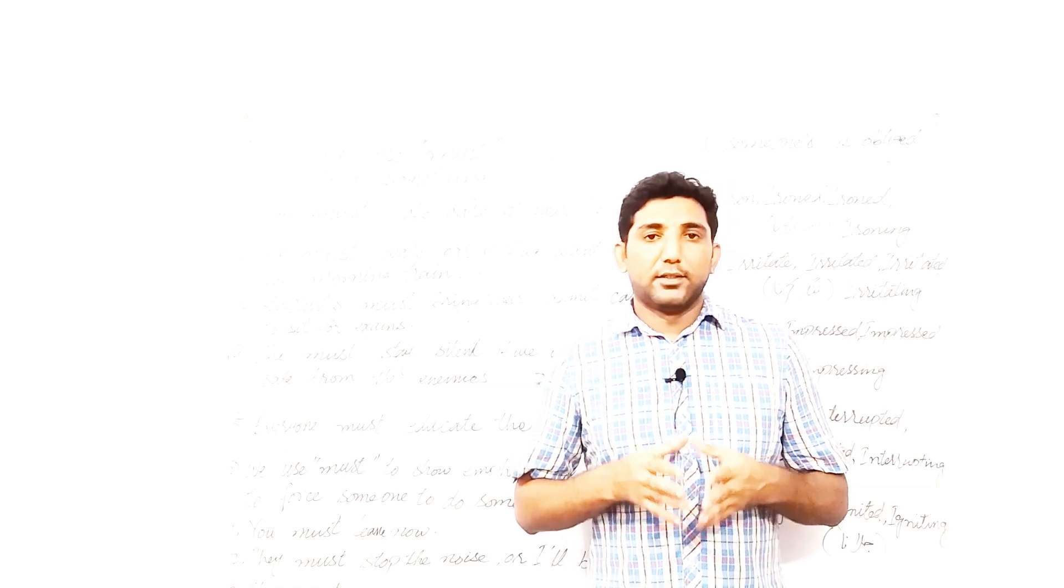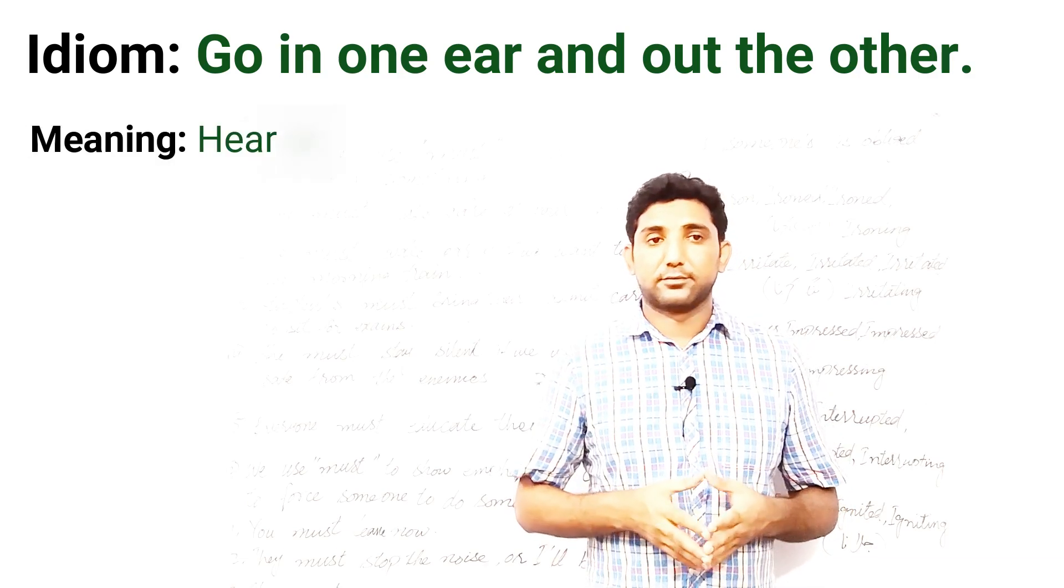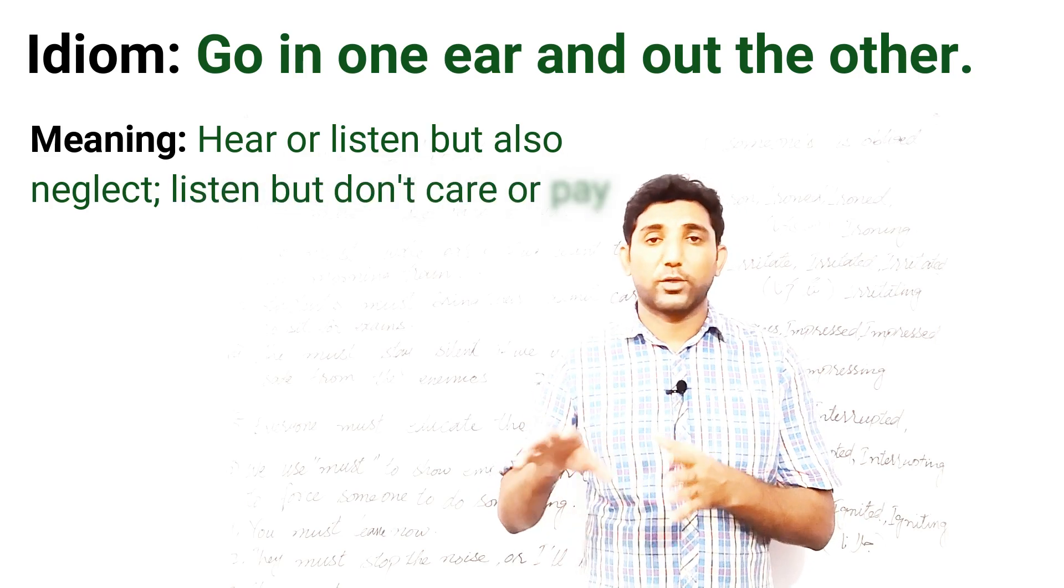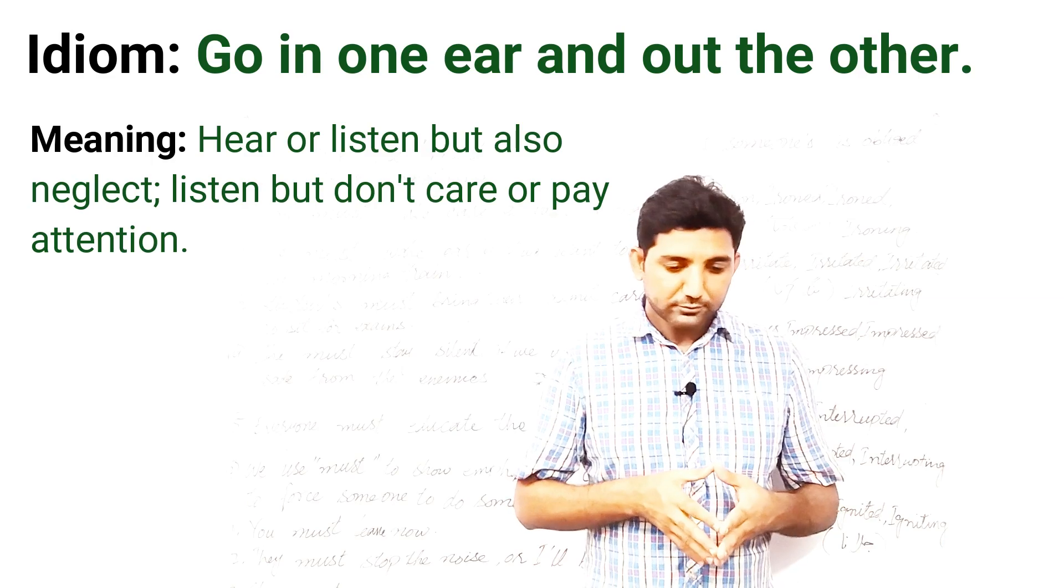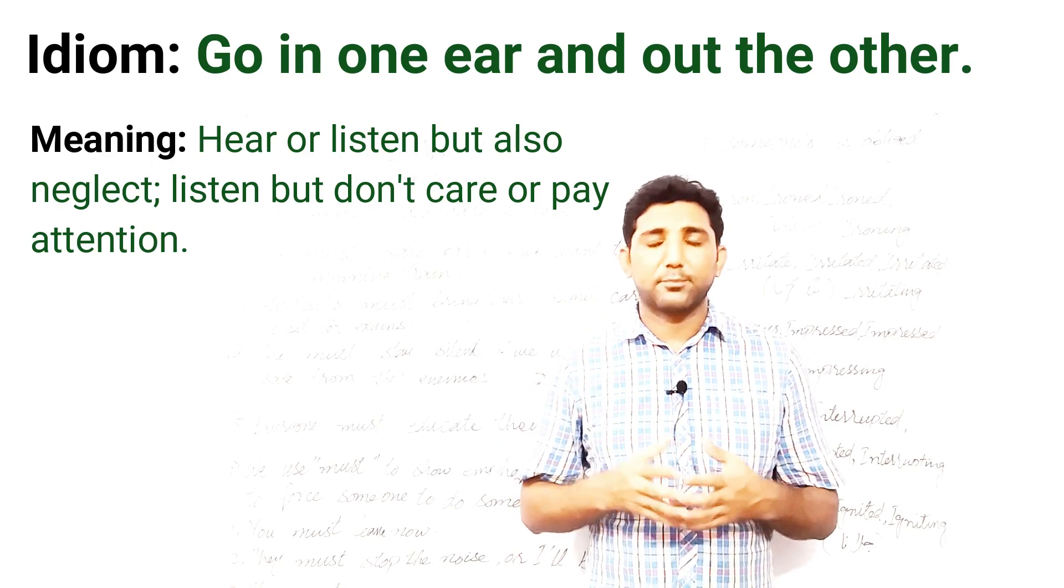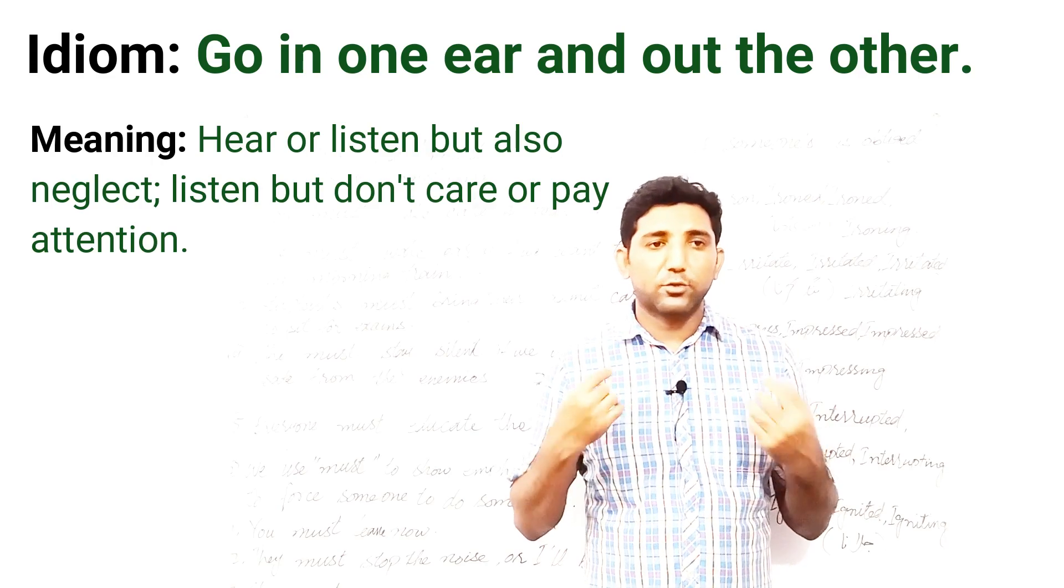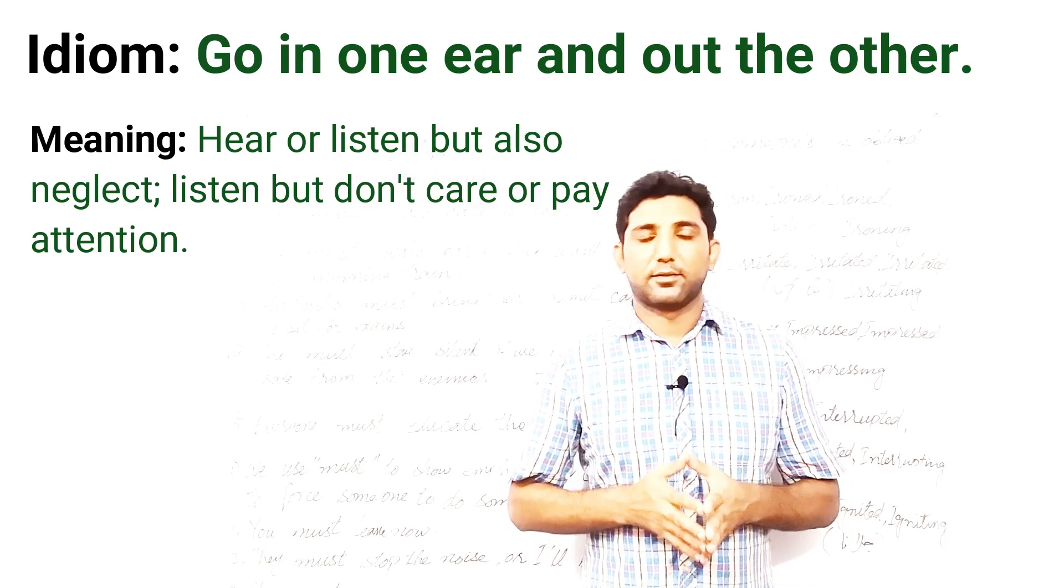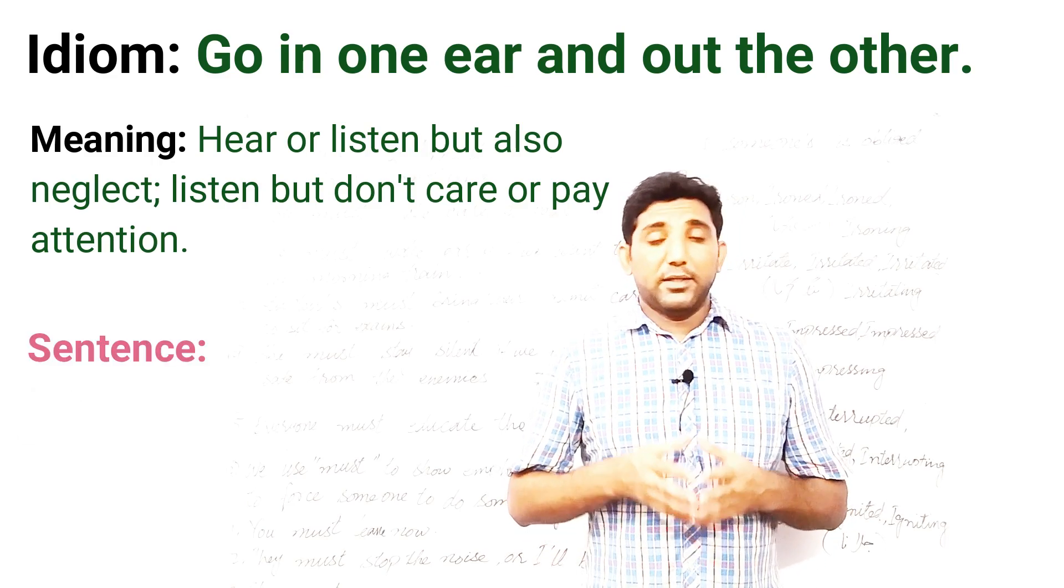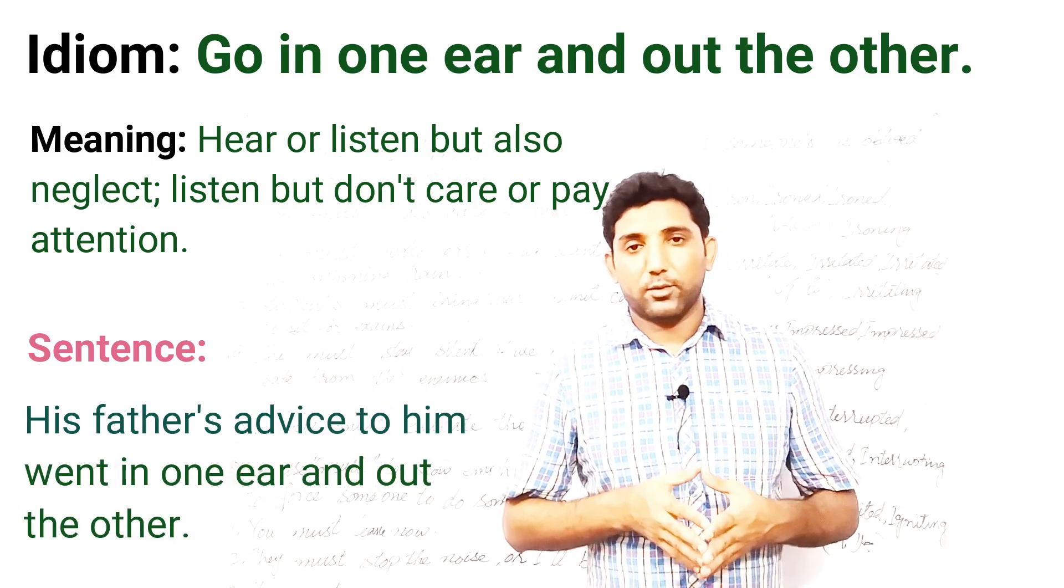Idiom number five: Go in one ear and out the other. It means to hear or listen to something but do not pay attention to what has been said. It's like you're talking to me, you're saying something to me. I'm listening but I'm not paying attention at all. I don't care whatever you have been saying even though I'm listening. So let's use this idiom in an example sentence. His father's advice to him went in one ear and out the other.